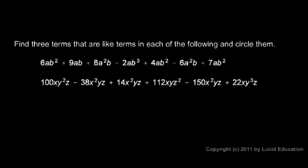Here's another example. Find three terms that are like terms in each of the following and circle them. AB squared — there's another AB squared, and there's another AB squared. So all three of those terms are AB squared terms. Let's circle those.